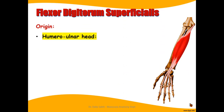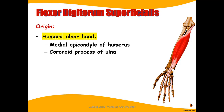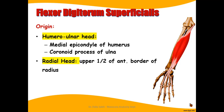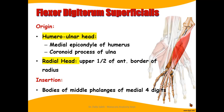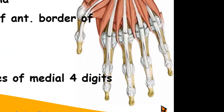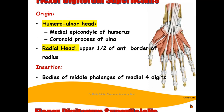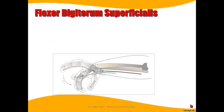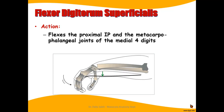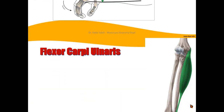The flexor digitorum superficialis arises by two heads. One is called the humeral-ulnar head, from the medial epicondyle of the humerus and the coronoid process of the ulna, and also by a radial head from the upper half of the anterior border of the radius. It inserts at the bodies of the middle phalanges of the medial four fingers. At their insertion, the tendons are split to give passage for the deeper tendons of the flexor digitorum profundus.